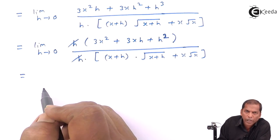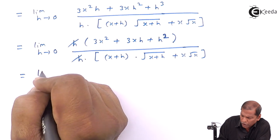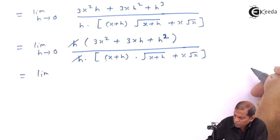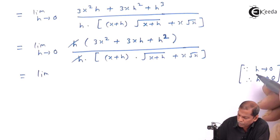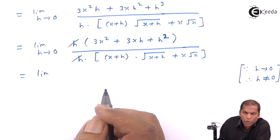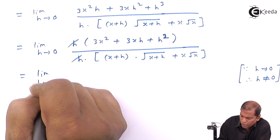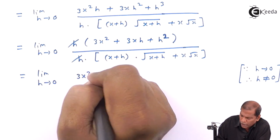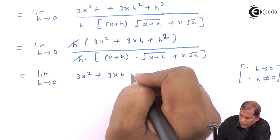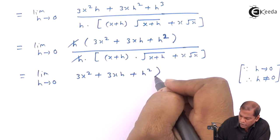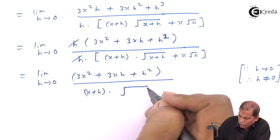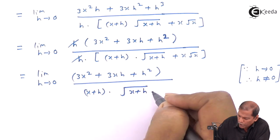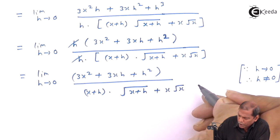We cancel h from numerator and denominator, stating the reason that h tends to 0 provided h is not equal to 0. So the next step is limit h tends to 0 of (3x² + 3xh + h²) divided by [(x+h) into square root of (x+h) plus x root x].